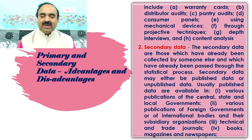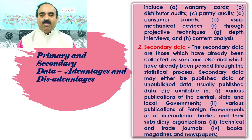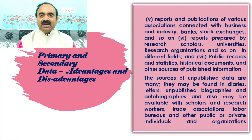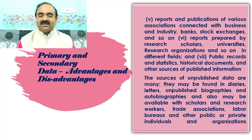Two, various publications of foreign governments or of international bodies and their subsidiary organizations. Three, technical and trade journals. Four, books, magazines, and newspapers. Five, reports and publications of various associations connected with business and industry, banks, stock exchanges, and so on. Six, reports prepared by research scholars, universities, research organizations, and so on, in different fields. And seven, public records and statistics, historical documents, and other sources of published information.